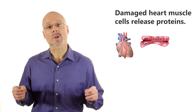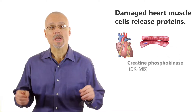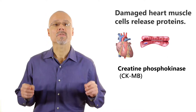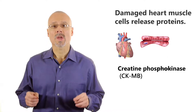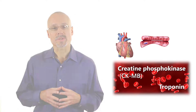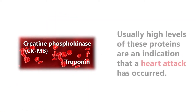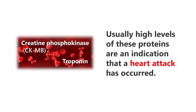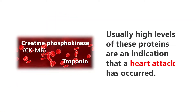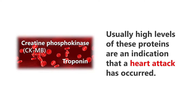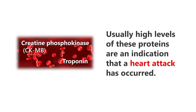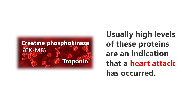An EKG is not the only way to confirm a diagnosis. Heart muscle cells damaged or destroyed during a heart attack release proteins, including creatine phosphokinase and troponin, into the bloodstream. The presence of higher-than-normal levels of these proteins in a blood sample usually means that a heart attack has occurred.